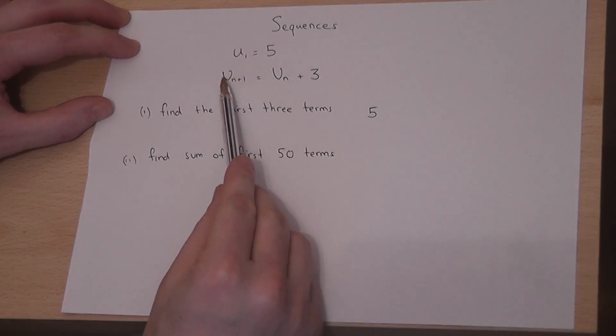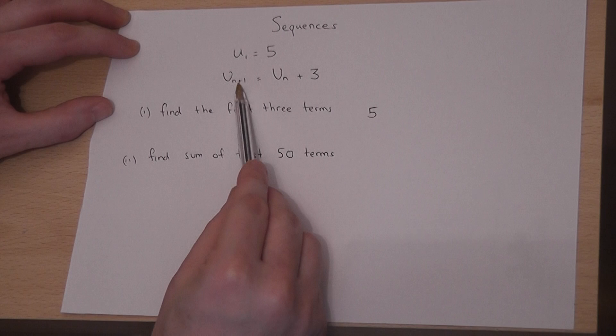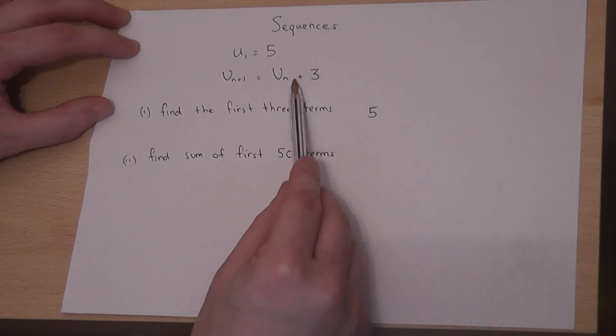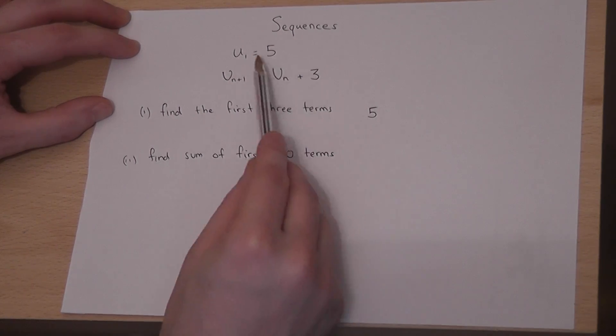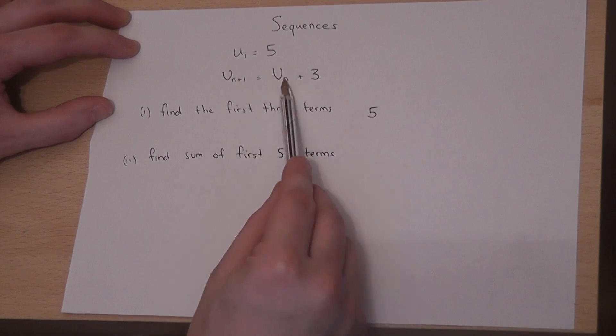And what this tells us is that to find the next term in the sequence, we use the previous term and we add on 3. So if the first term is 5, the second term is the first term plus 3...